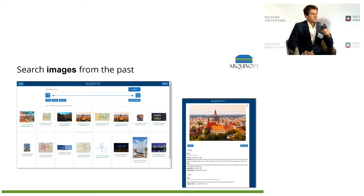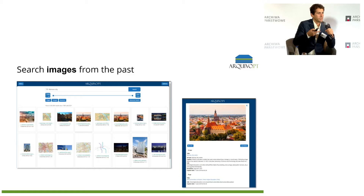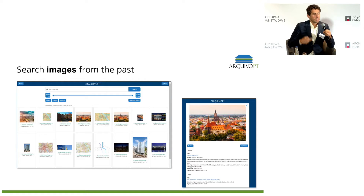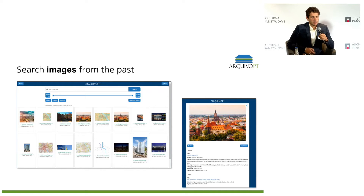You can also search images from the past. For example, searching for Warsaw City, you first get images related to the query, but then you can click on an image and see where that image appeared. This is very important to understand the context in which the image appears, and you can also visit the corresponding web archive page.